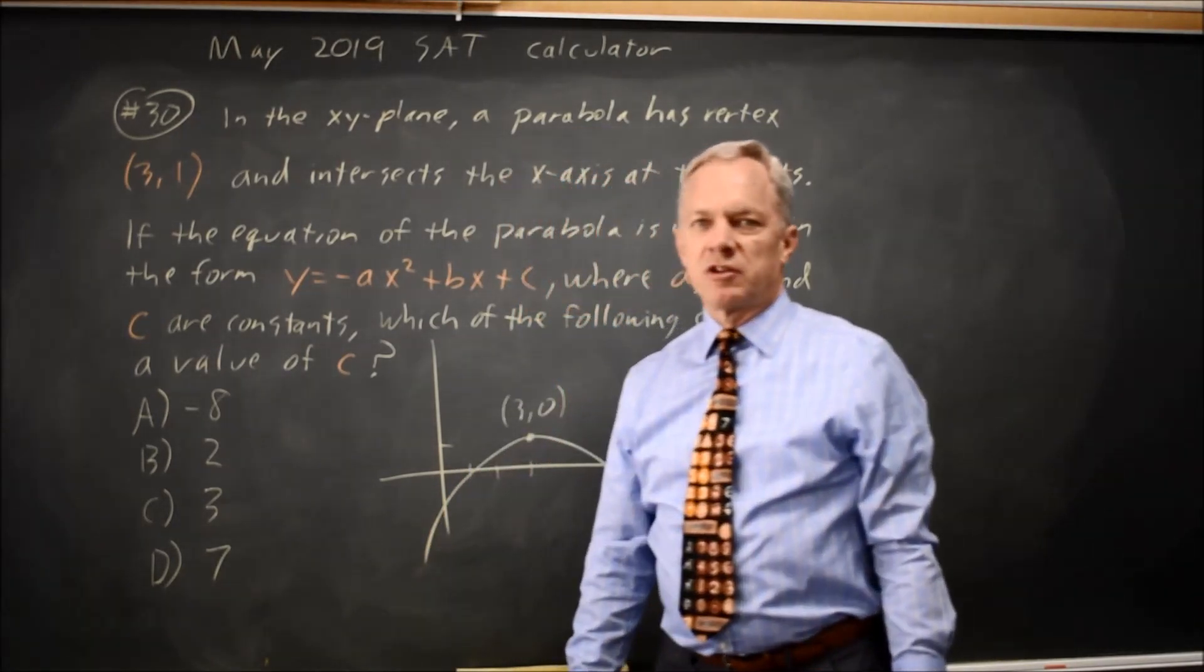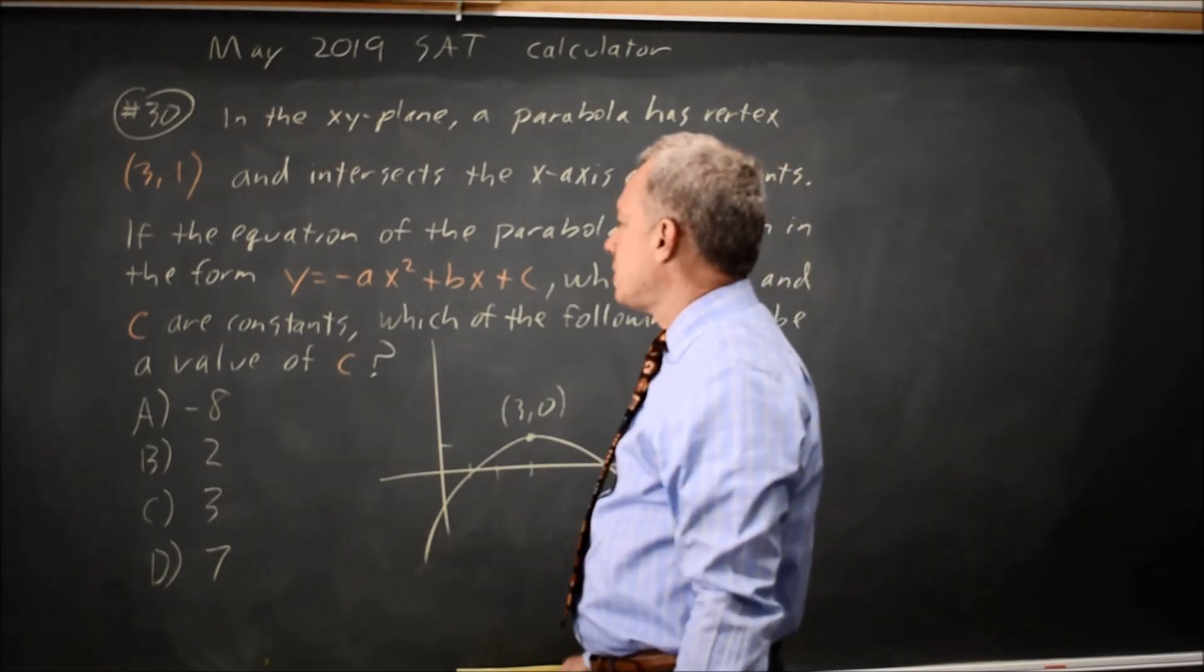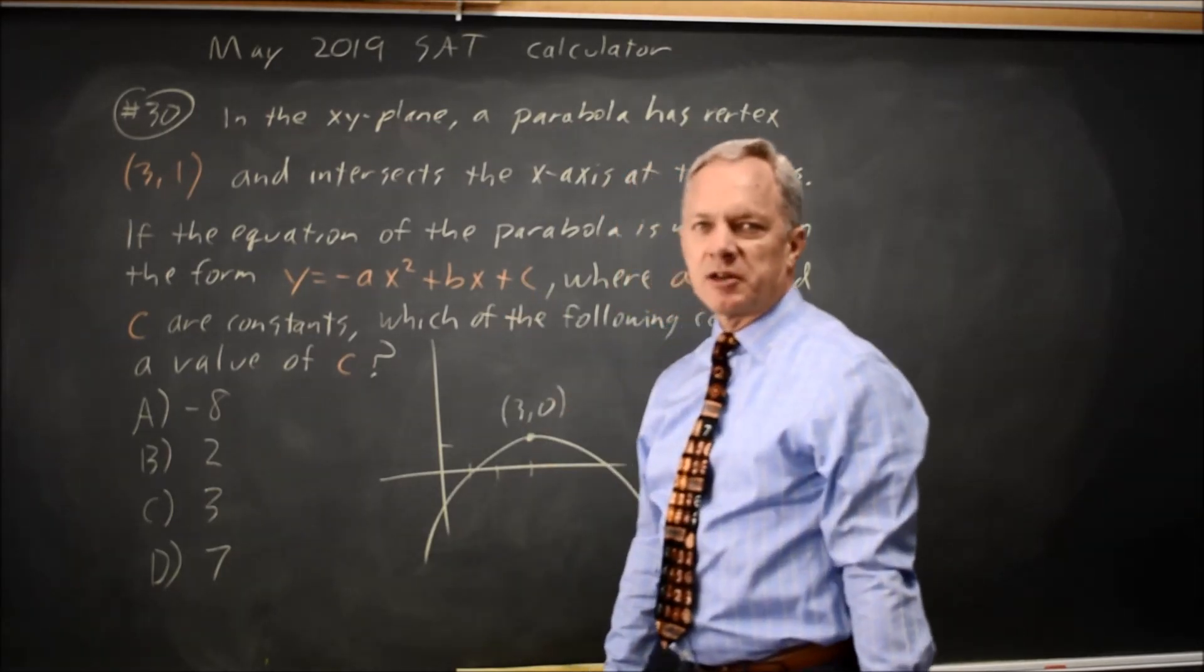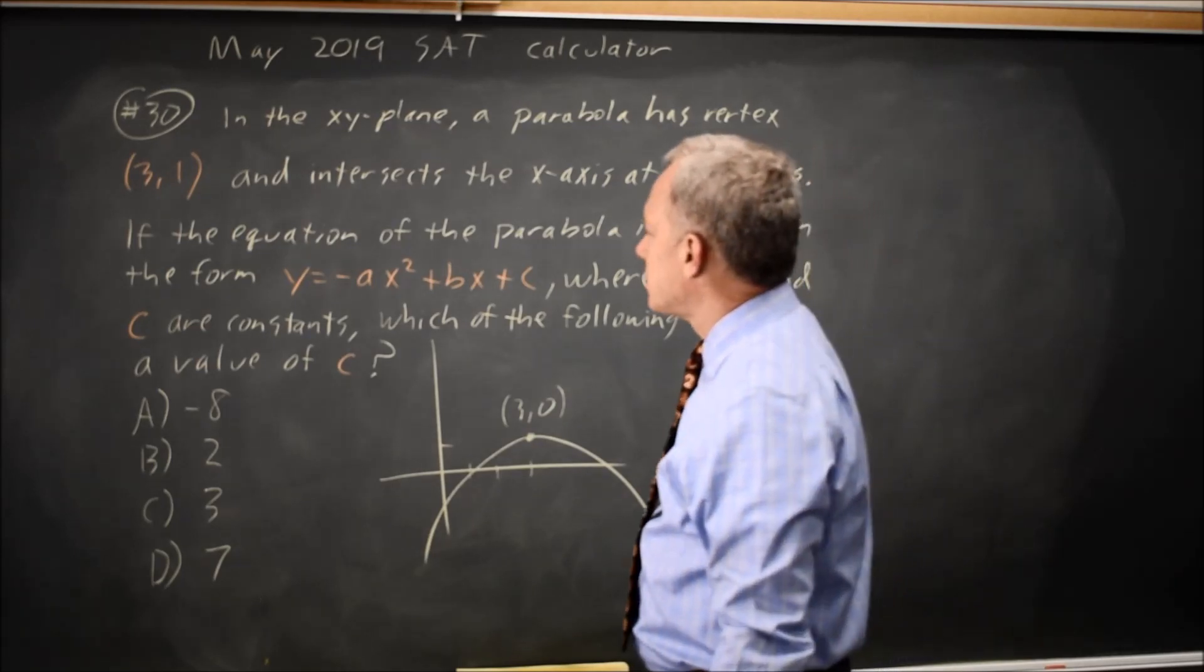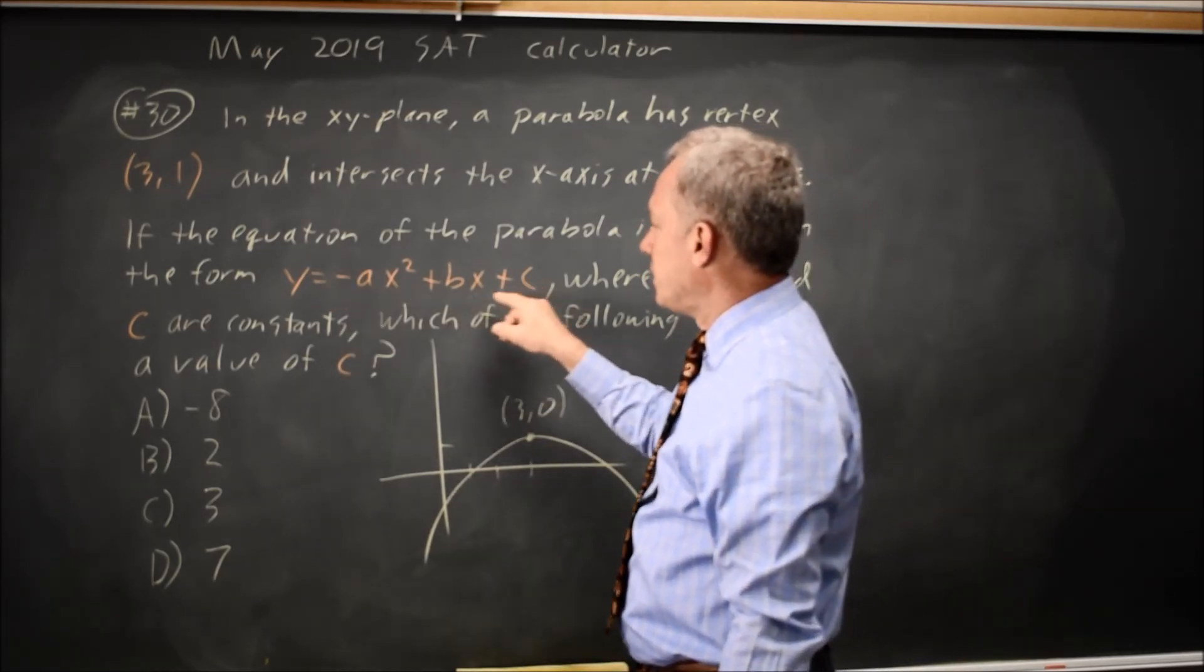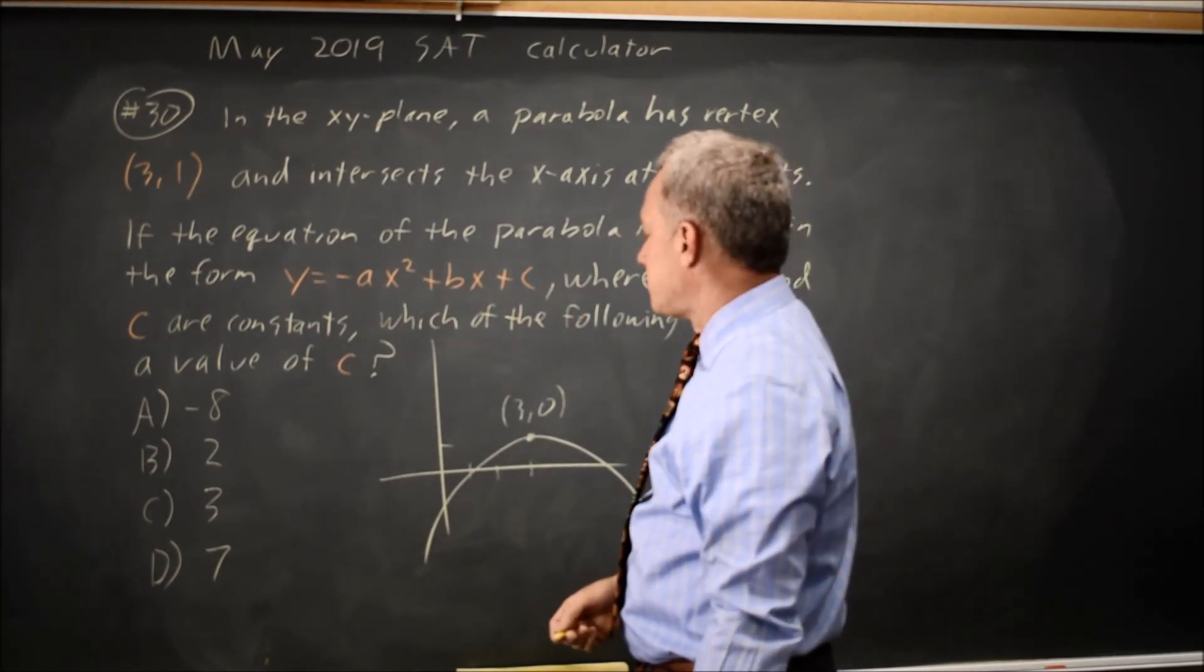But they don't give us enough information to find the actual equation of the parabola. They do tell us it has the form y equals negative ax squared plus bx plus c, where the negative indicates that it opens down. And what we should notice is that at x equals 0, the y value will be c. So the y-intercept will be c.